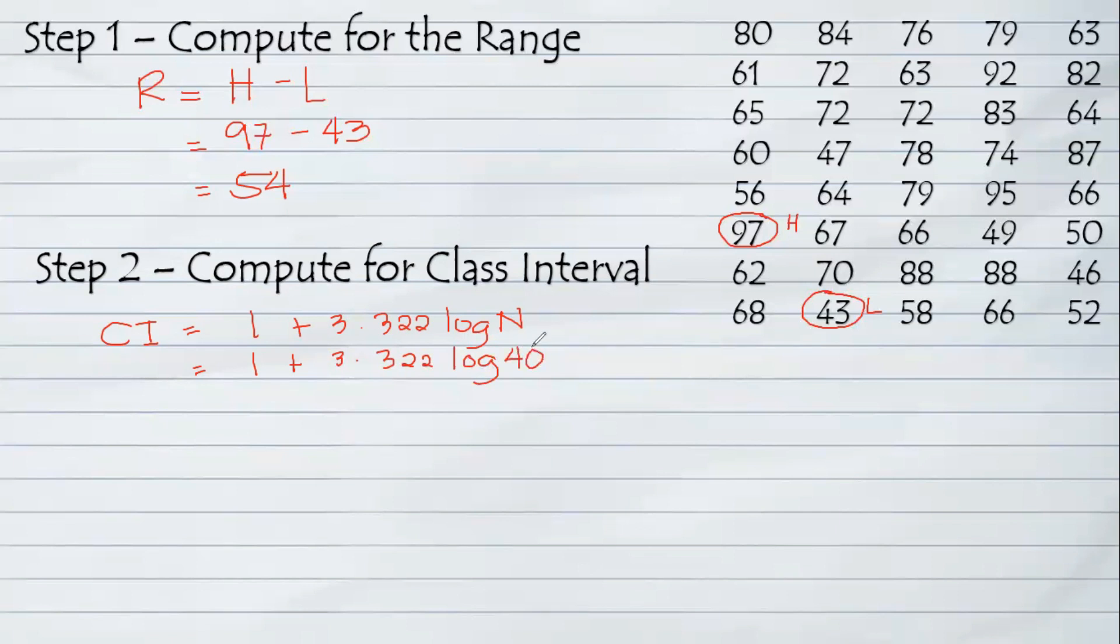All you need to do is multiply and add directly to 1. So log 40 times 3.3 plus 1 results to 6.32. You will be rounding up the value into a whole number and the result is 7. If the result is 6.1 still, we will be rounding up the item. Please take note on that one.